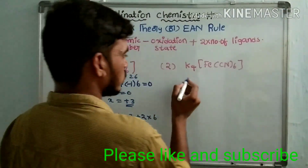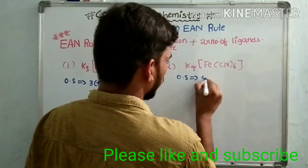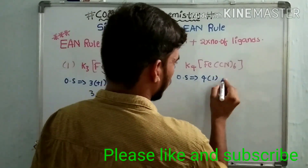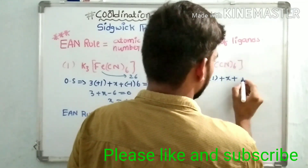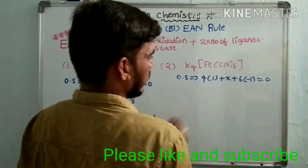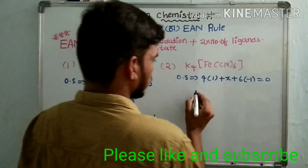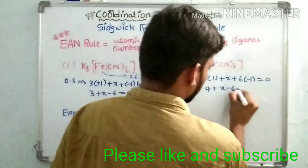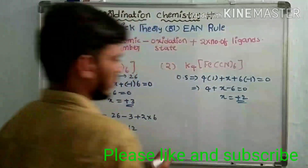For the second complex K₄[Fe(CN)₆], we find the oxidation state of iron. Potassium has a plus one oxidation state and cyanide has a minus one oxidation state. So: 4(+1) + x + 6(−1) = 0, giving 4 + x − 6 = 0, therefore x equals plus two.